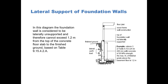In this diagram, the foundation wall is considered to be laterally unsupported, and therefore cannot exceed 1.2 meters from the top of the concrete floor slab to the finished ground, based on Table 915-42-A.